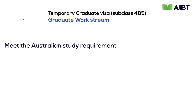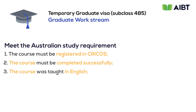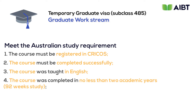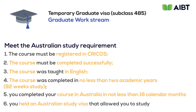The course must be registered on CRICOS, it must have been completed successfully, the course must have been taught in English, it must have been completed in no less than two academic years or 92 weeks of study, the course must have been completed in 16 calendar months, and the student must have held a valid student visa in Australia. What is CRICOS? How do you know if you meet the minimum 92 weeks of study? What are 16 calendar months? Let's explain each of these concepts.